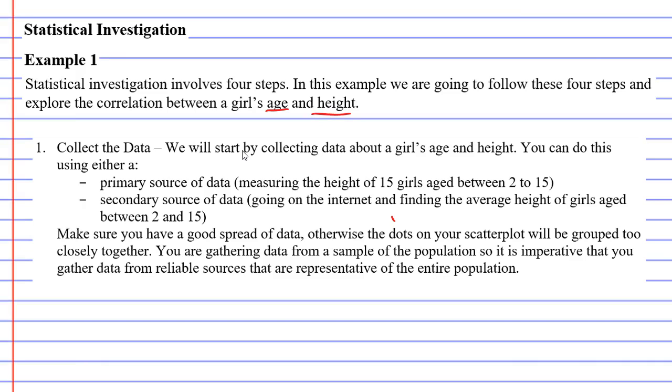This is the investigation that we're going to explore here. The first thing we're going to do is collect some data, and we'll start by collecting data about a girl's age and height. You can do this either one of two ways. You can either do it using a primary source of data. This means actually going out there, measuring the height of 15 girls, and you want these girls to be aged between 2 to 15.